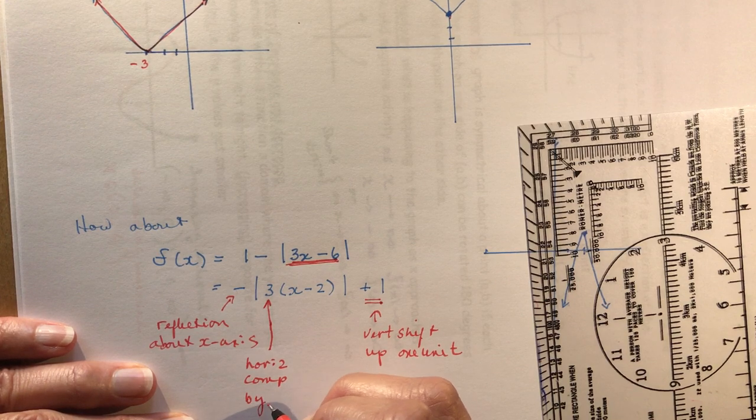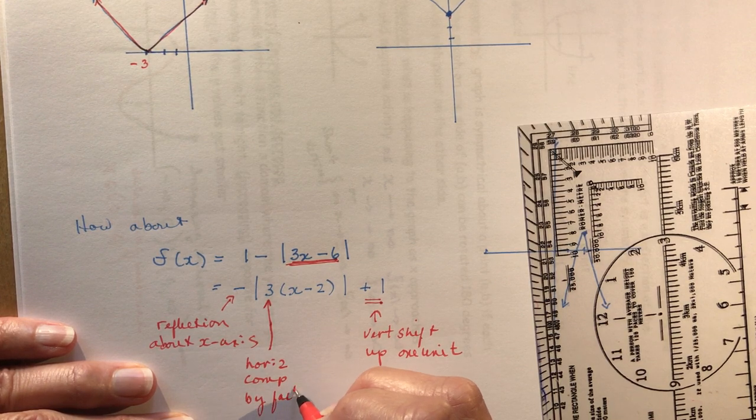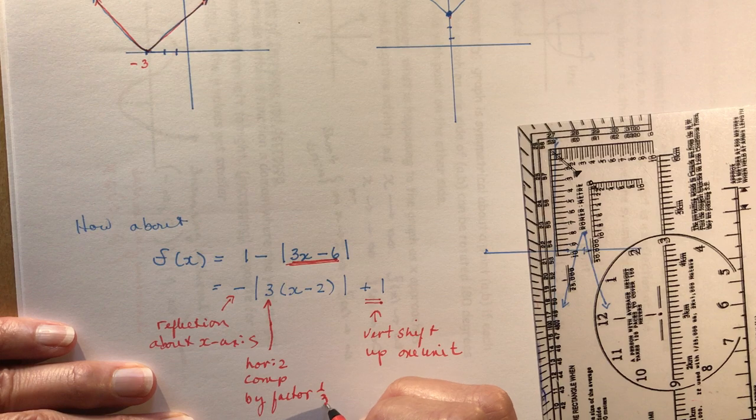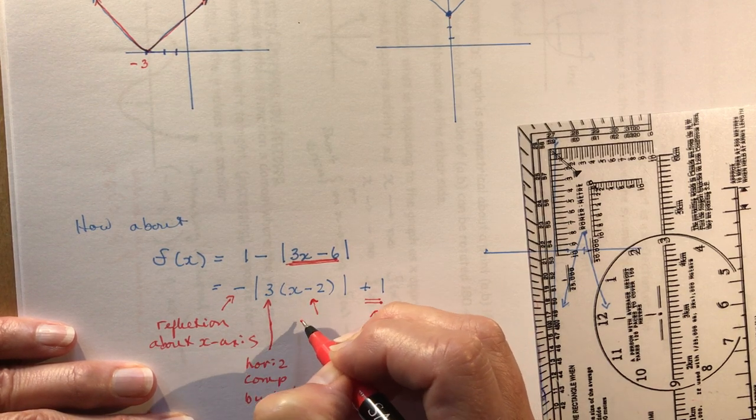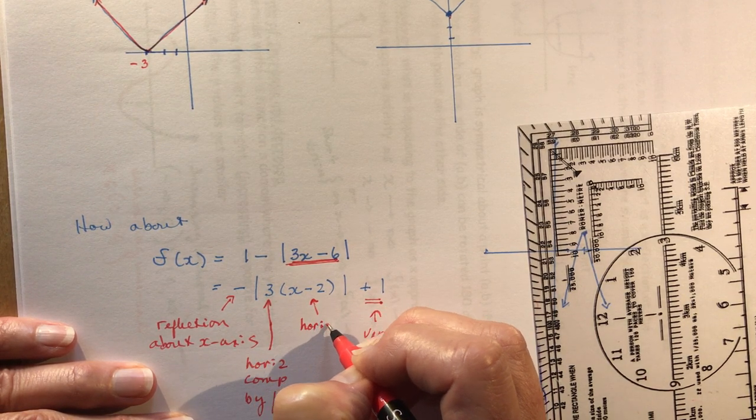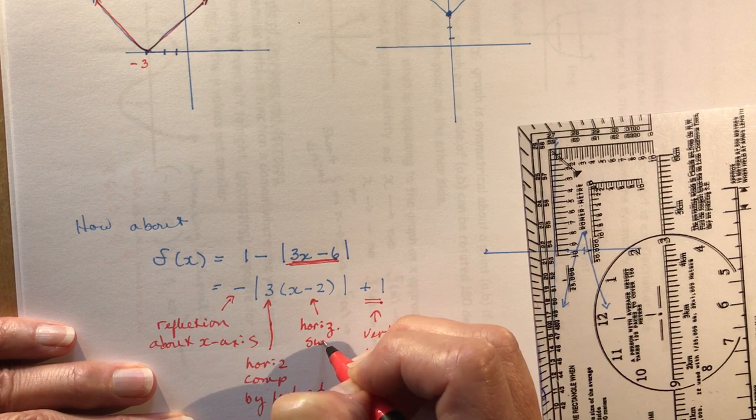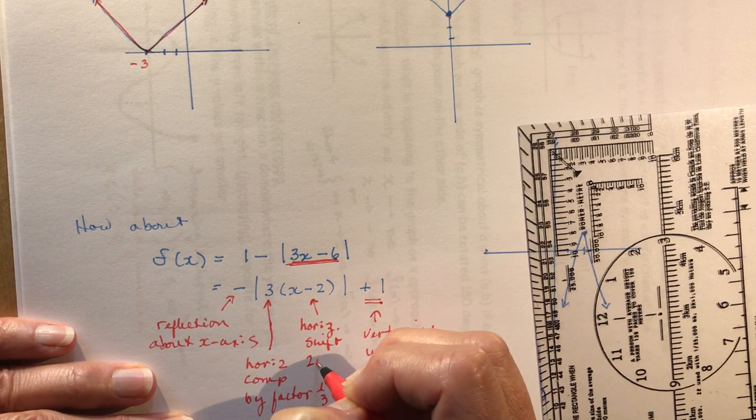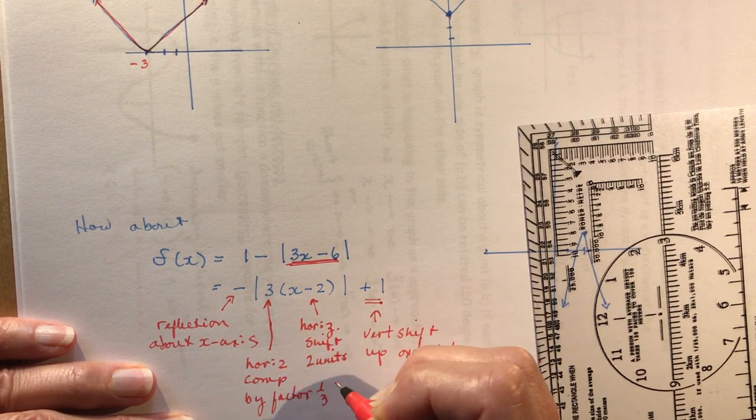And this minus 2 means horizontal—everything x is horizontal—horizontal shift 2 units right.